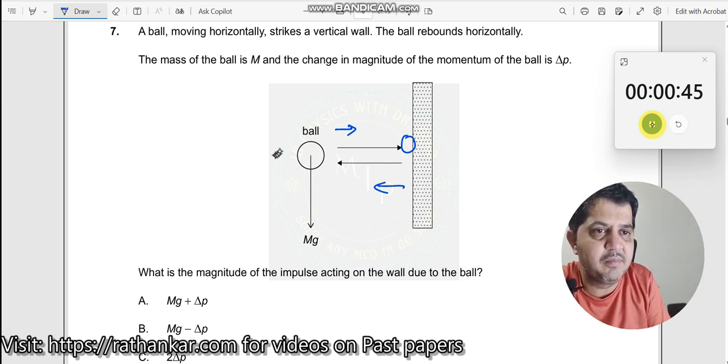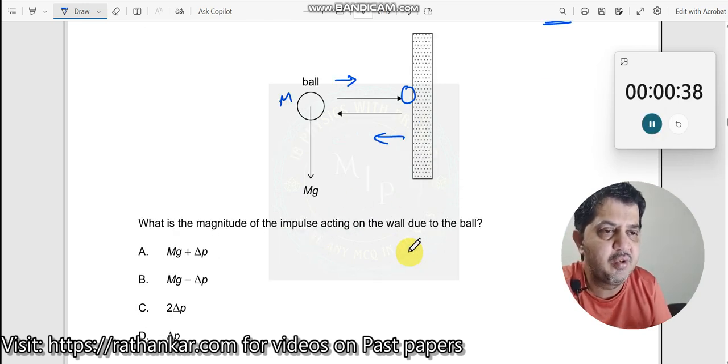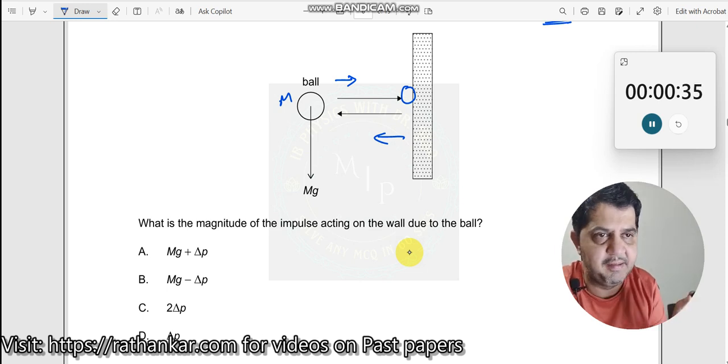The mass of the ball is m, change in magnitude of the ball is Δp. What is the magnitude of the impulse acting on the wall due to the ball? See, impulse and change in momentum are same.